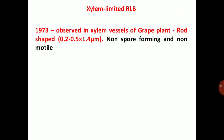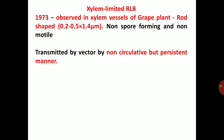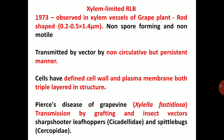Xylem-limited RLB — first observed in 1973 in xylem vessels of grape plant. Rod-shaped, 0.2 to 0.5 by 1.4 micrometers in size. Non-spore forming and non-motile. Transmitted by vector in a non-circulative but persistent manner — meaning the bacteria will not circulate in the bodies of insects but has a latent period in insects. Cells have a defined cell wall and plasma membrane, both triple-layered in structure. Pierce's disease of grapevine is caused by Xylella fastidiosa; transmission by grafting and insect vectors — sharpshooters, leafhoppers under Cicadellidae, and spittle bugs under Cercopidae.